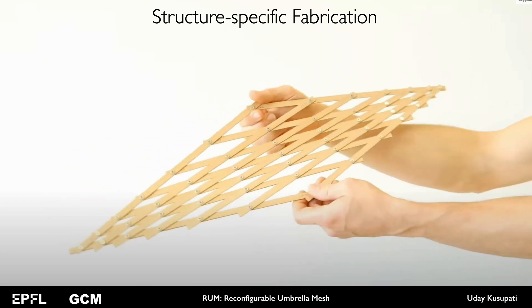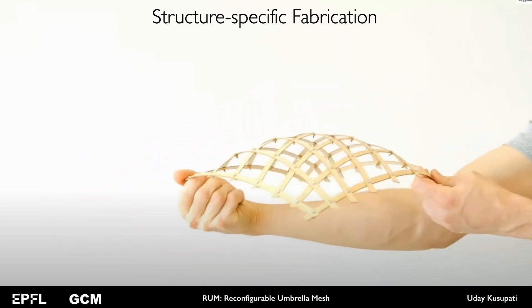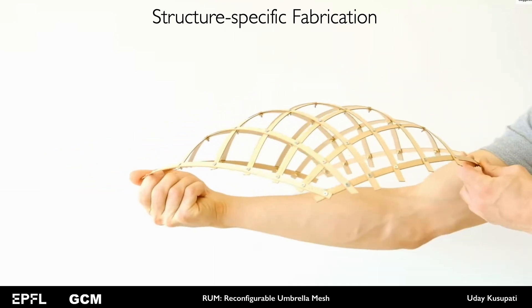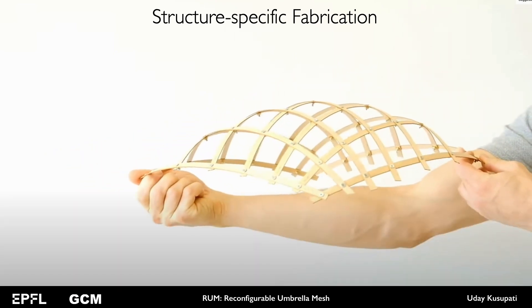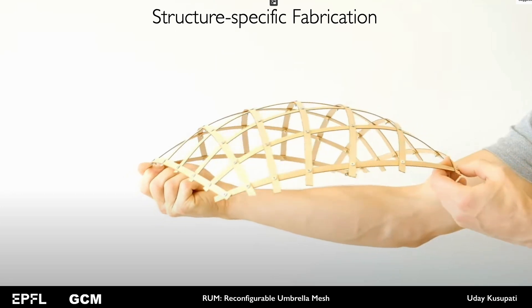For example, if you take a grid shell, the lengths of the beams and the joint positions are all specific to the current deployed shape. If one were to deploy to a new shape, one needs to fabricate new beams and reassemble them.